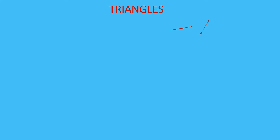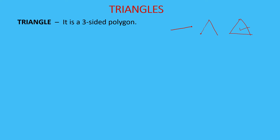Now suppose I add one more line. So now we have a total of three line segments. With these three line segments, you can see I have made a closed figure. This closed figure is made up of three line segments, so it is a polygon. And we know that this polygon is a triangle.